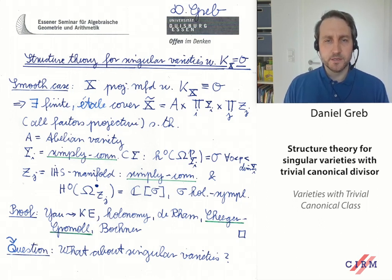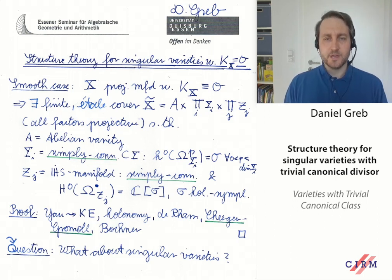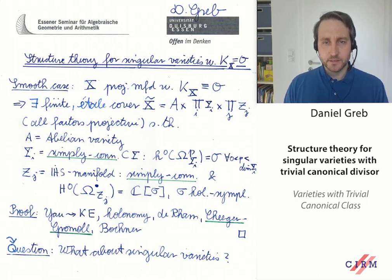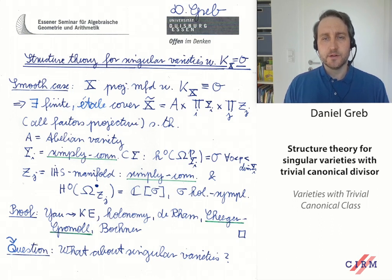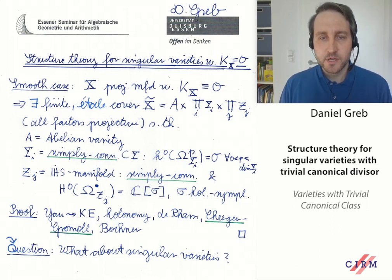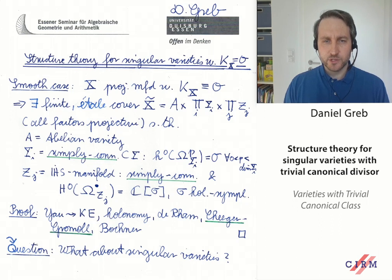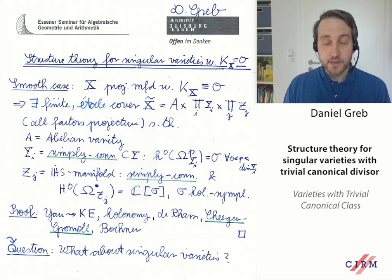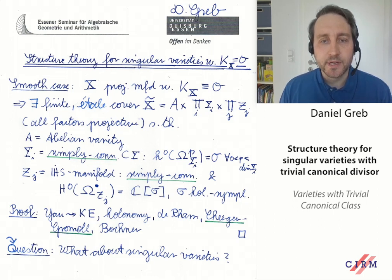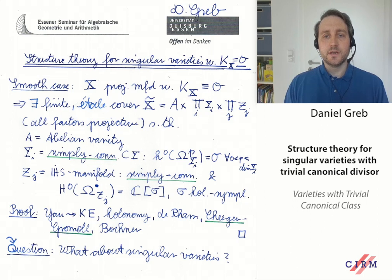And Z_j is an irreducible holomorphic symplectic, also called hyperkähler manifold, which means — as in the Calabi-Yau case — there is a simply connectedness assumption and also a second assumption on the algebra of holomorphic forms. Namely, in this case, we require that H^0(Ω(Z_j)) is generated by a holomorphic symplectic two-form.